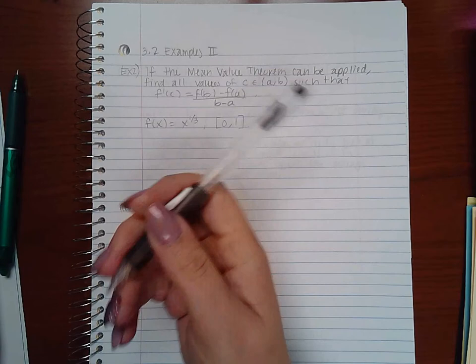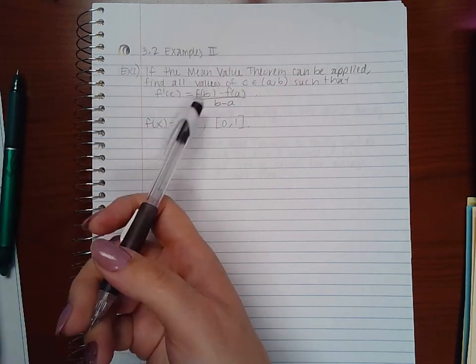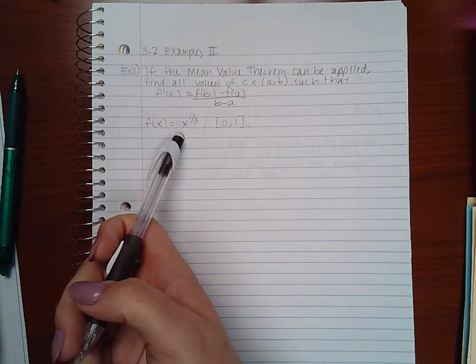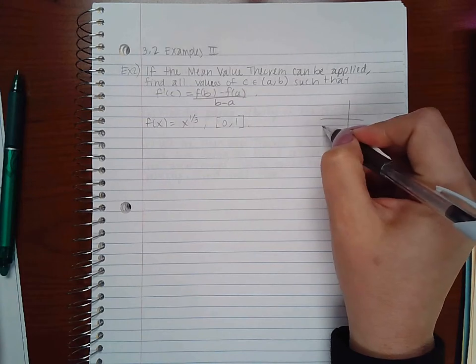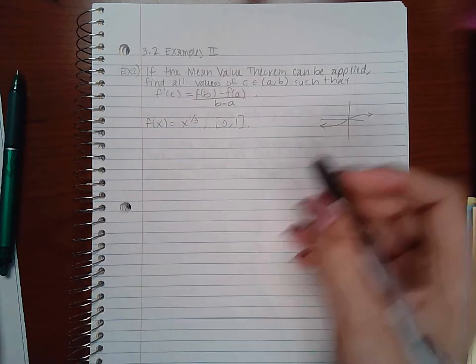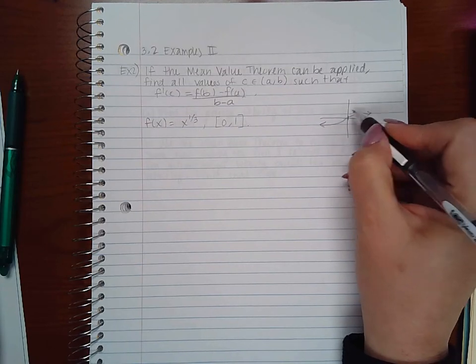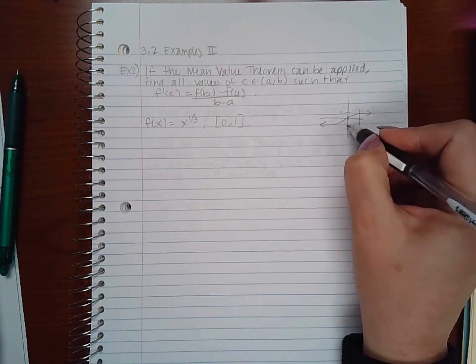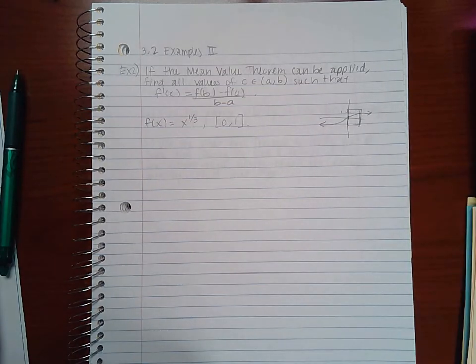The Mean Value Theorem tells us that f has to be continuous. Is this function continuous? It is a function that looks like this, so it is continuous on the interval [0,1]. We're basically just zooming in on this part of the graph and it is continuous within that graph.